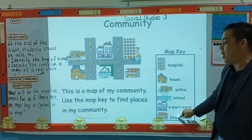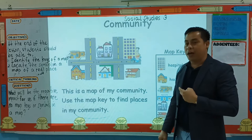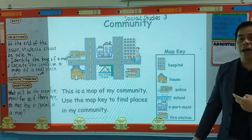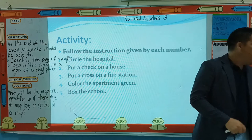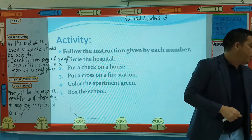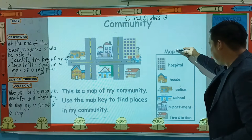For example, you are new in my community and you want to visit my house. So let's go back to the instructions. The first instruction is: circle the hospital. So please go ahead. Let us look at this map key - where is the hospital? This one. This is the hospital.